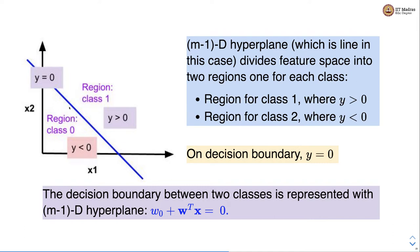The decision boundary between two classes is represented by an m-minus-1 dimensional hyperplane with the equation w0 + w^T x = 0. This equation is in vectorized form.